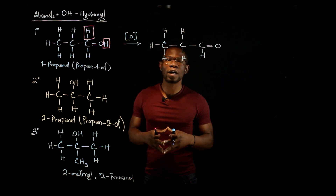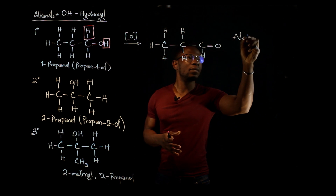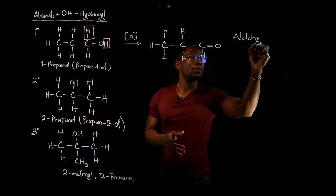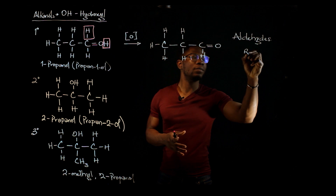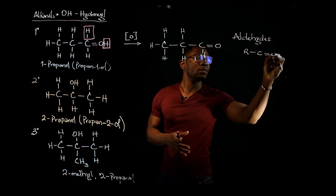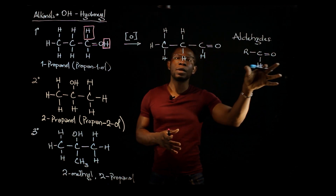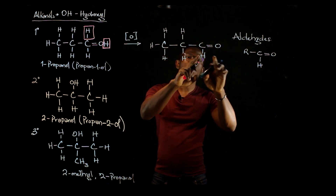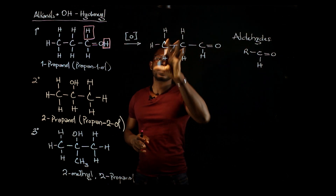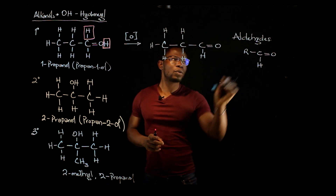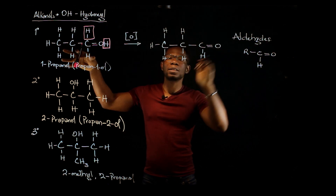This belongs to a class of compounds called aldehydes. As you can see, this is the carbonyl group, and this is an alkyl group. So when you oxidize a primary alcohol, you get aldehydes.